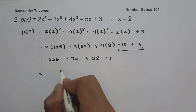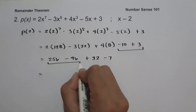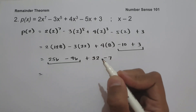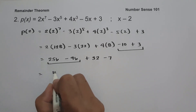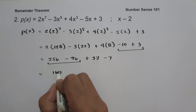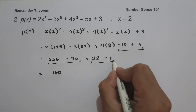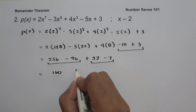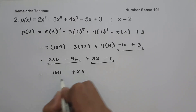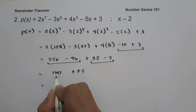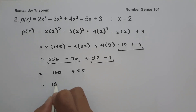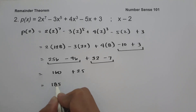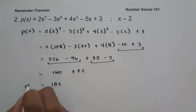So we have 256 minus 96, that is 160. Then 32 minus 7, that is 25. So 160 plus 25 is 185. And this will be our remainder.